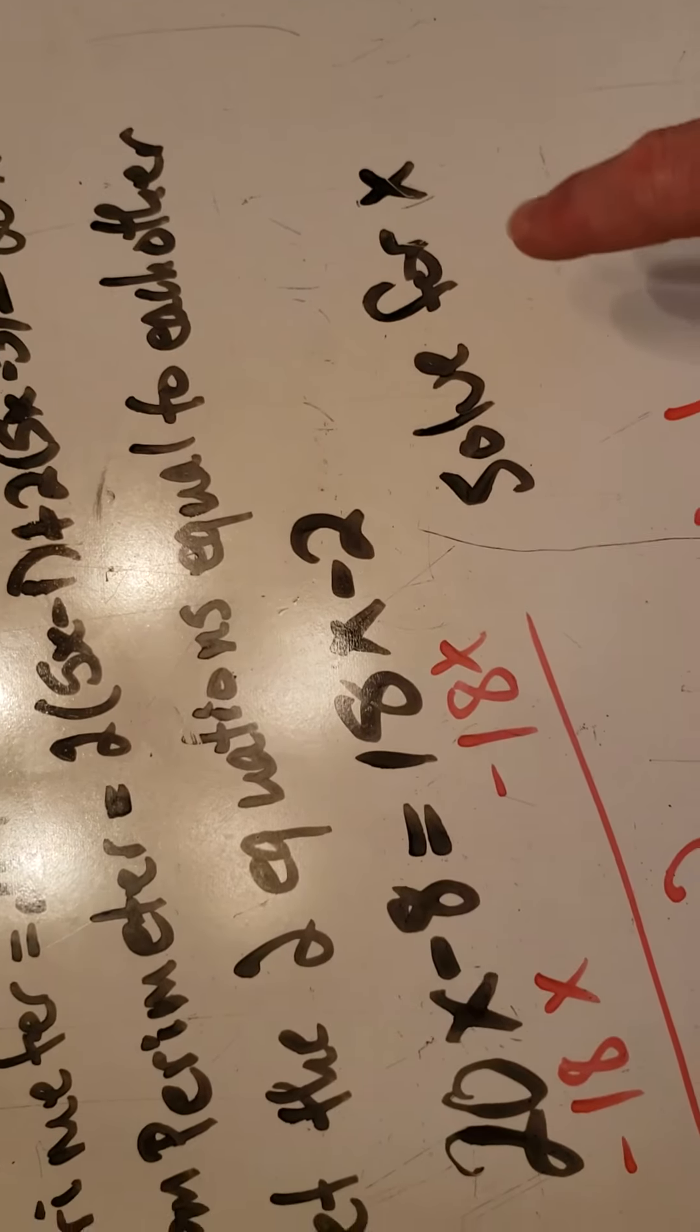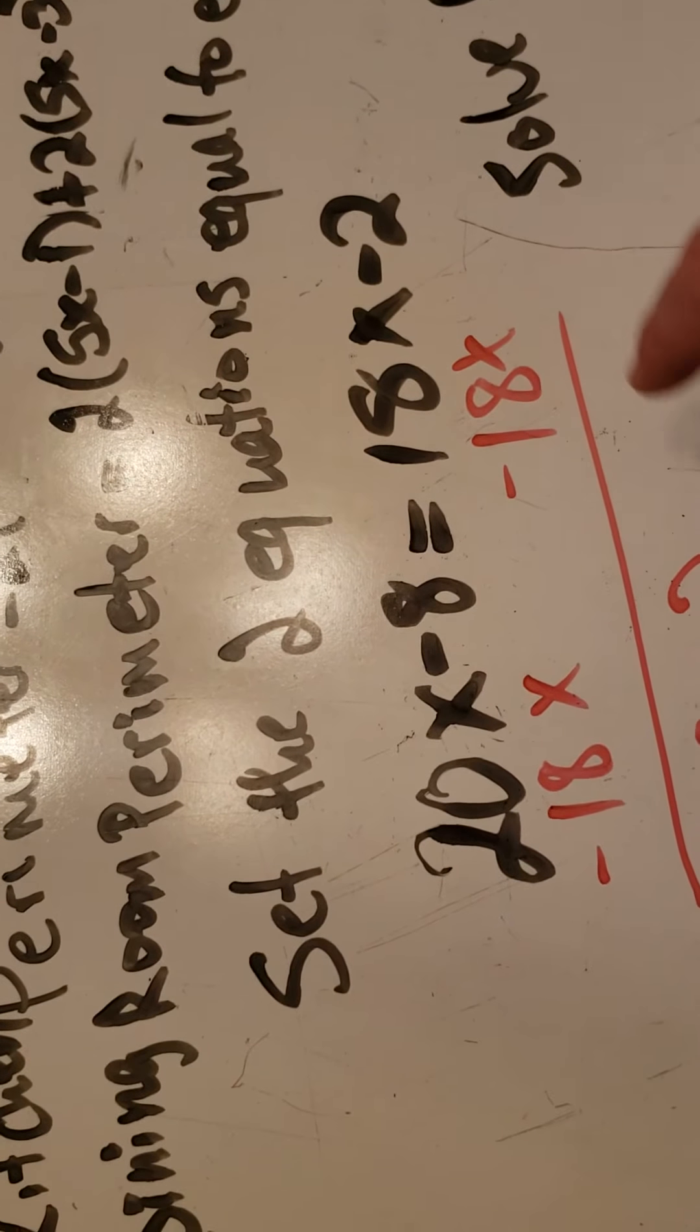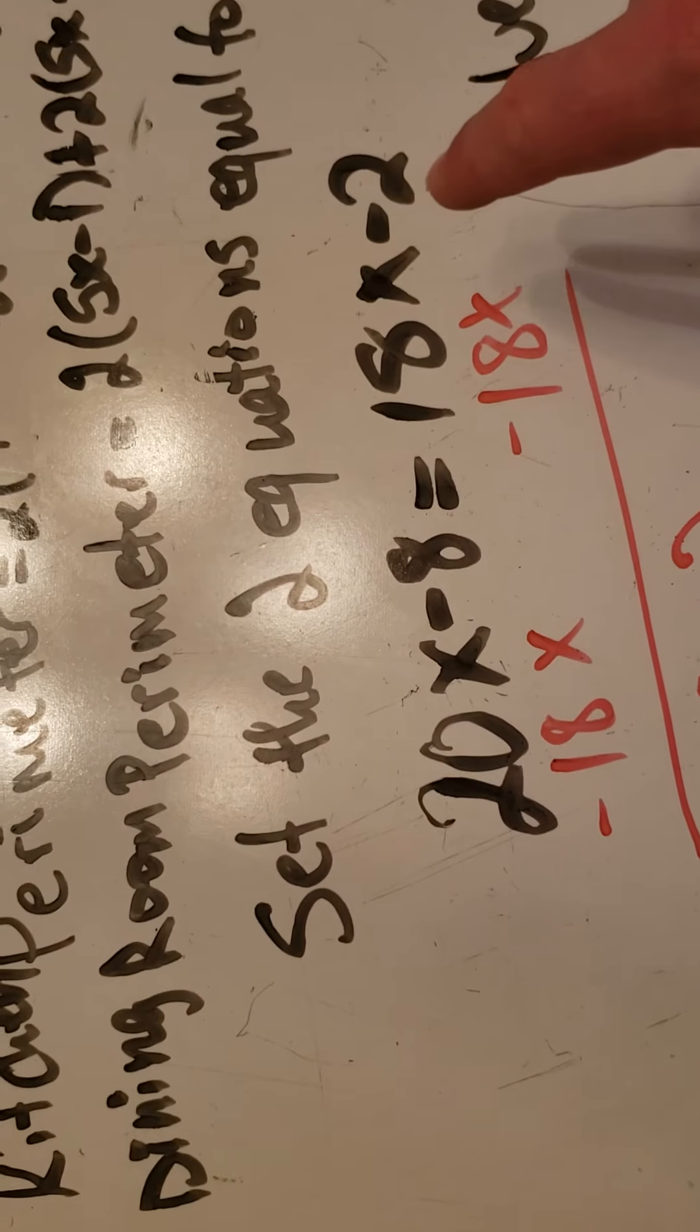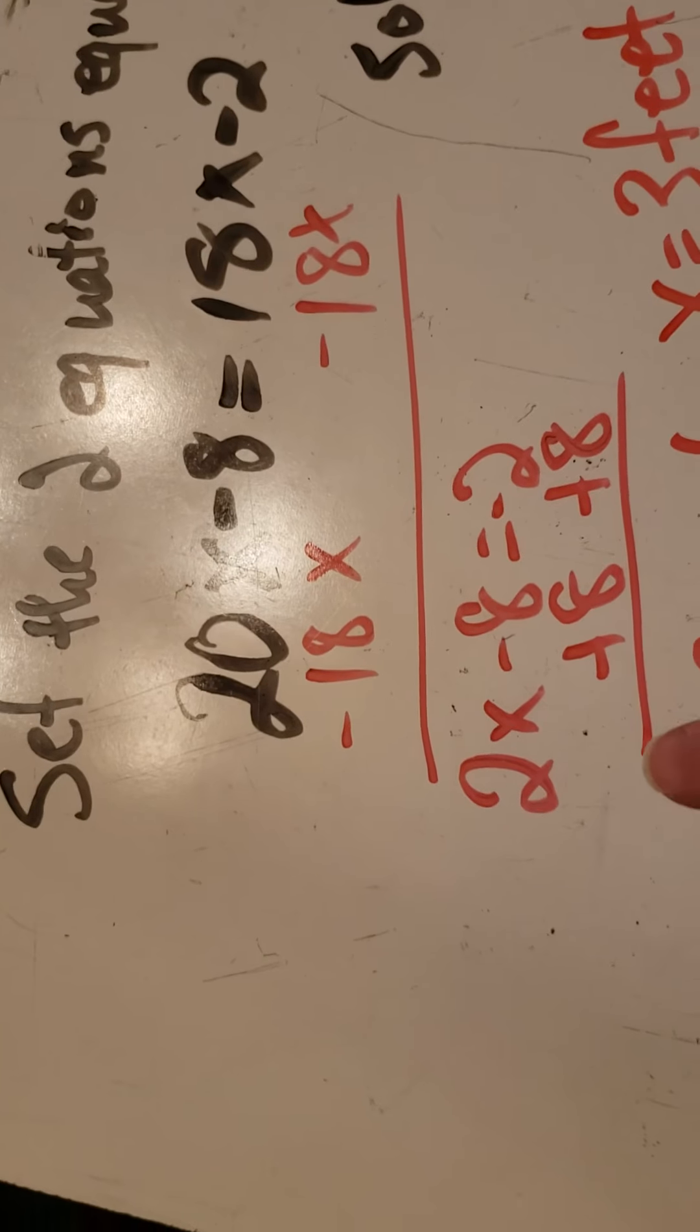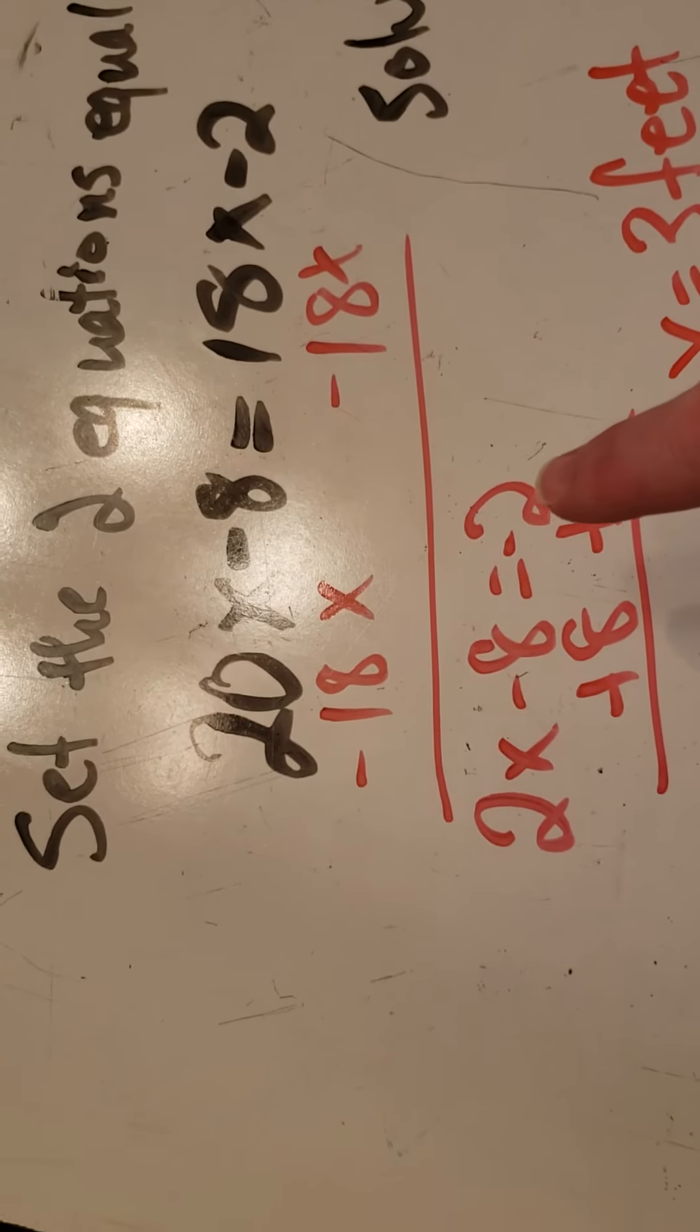And now I need to solve for x. So the first thing I'm going to do is get all my x's on the same side. So I'm going to move this 18x to the left by subtracting 18x. And I get 2x minus 8 equals negative 2.